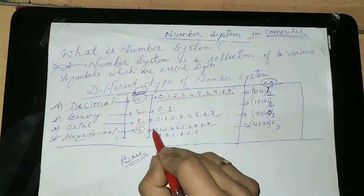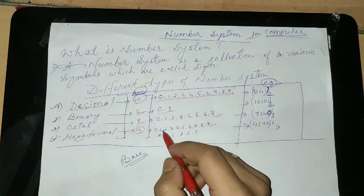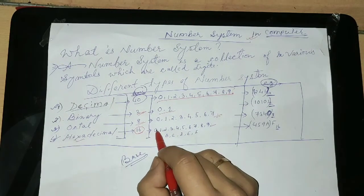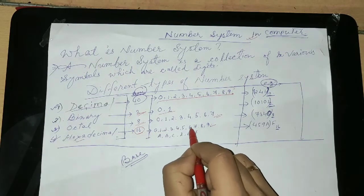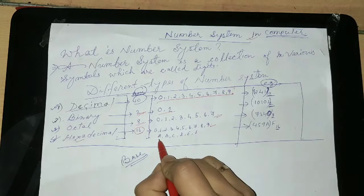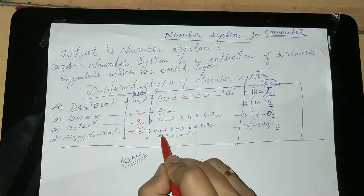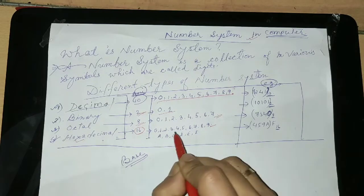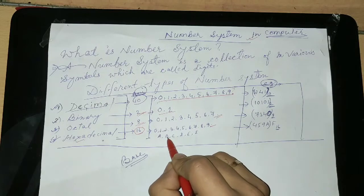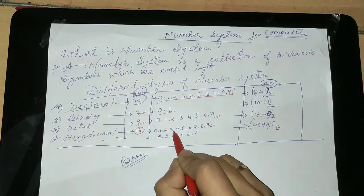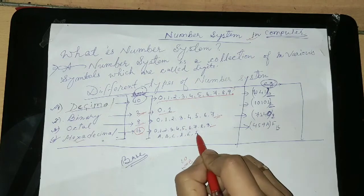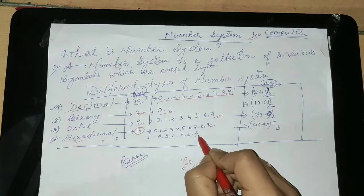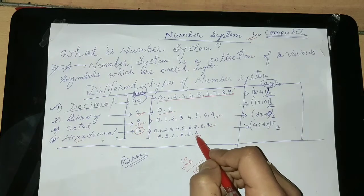So, one thing you have to know is that you can count: 0, 1, 2, 3, 4, 5, 6, 7, 8, 9. So A — what is A? A means 10. So B means 12, C 13, D 14, E 15 and F. Okay, so in this way you have to go.